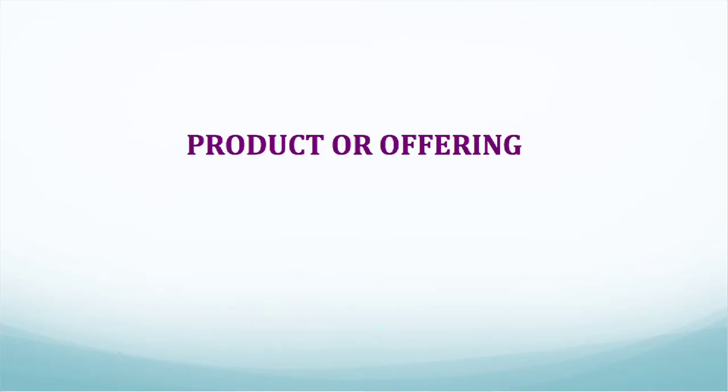So in marketing this is a primary concept: need-centric, with needs giving rise to specific wants, and wants giving rise to demand — willingness backed by affordability. Then there is another concept called product, and in marketing terminology we also interchangeably use the word 'offer' or 'offering.' By product we mean anything that is capable of satisfying a need or want. This visual lecture is also a product because it is trying to satisfy a need of the learner.